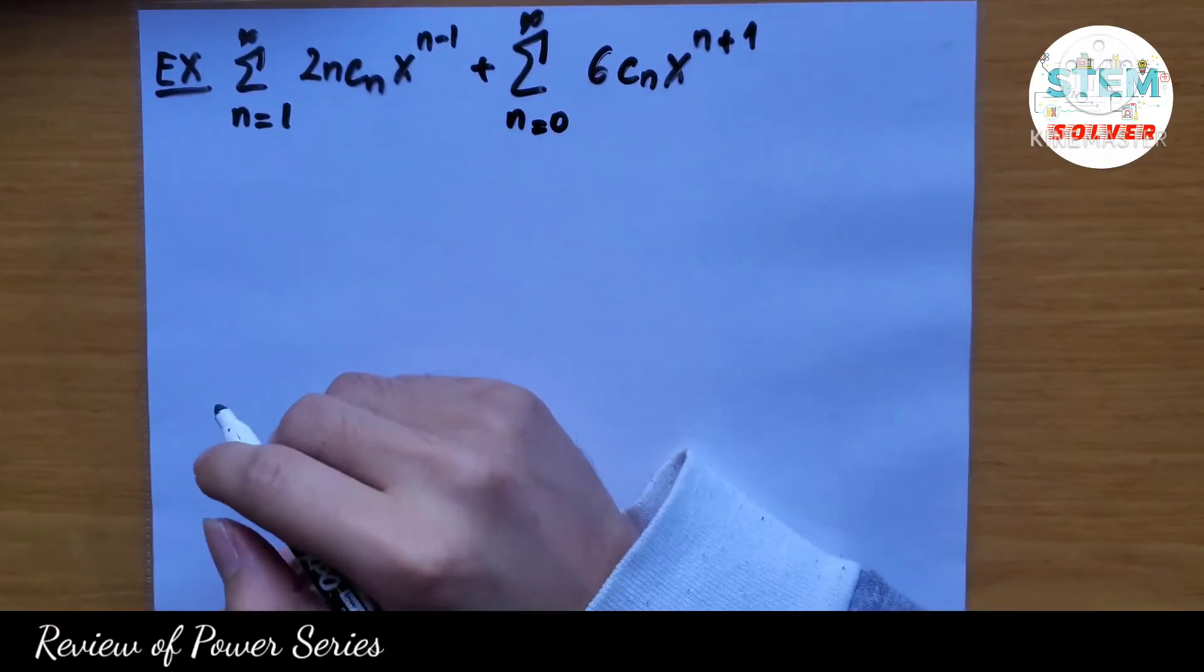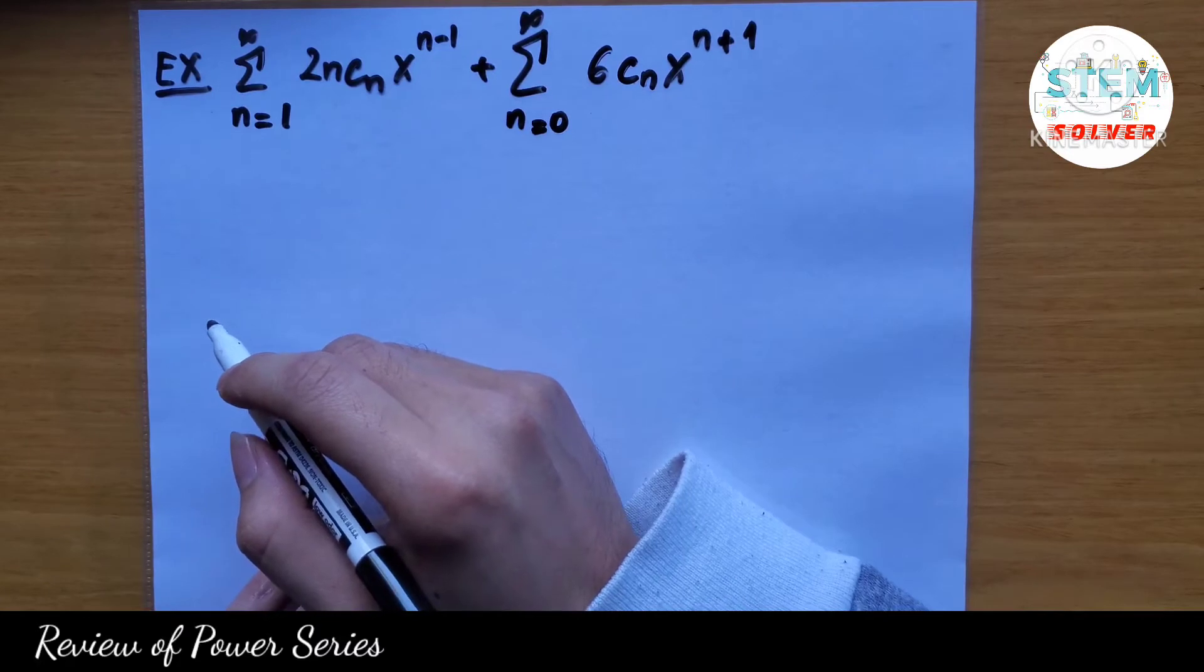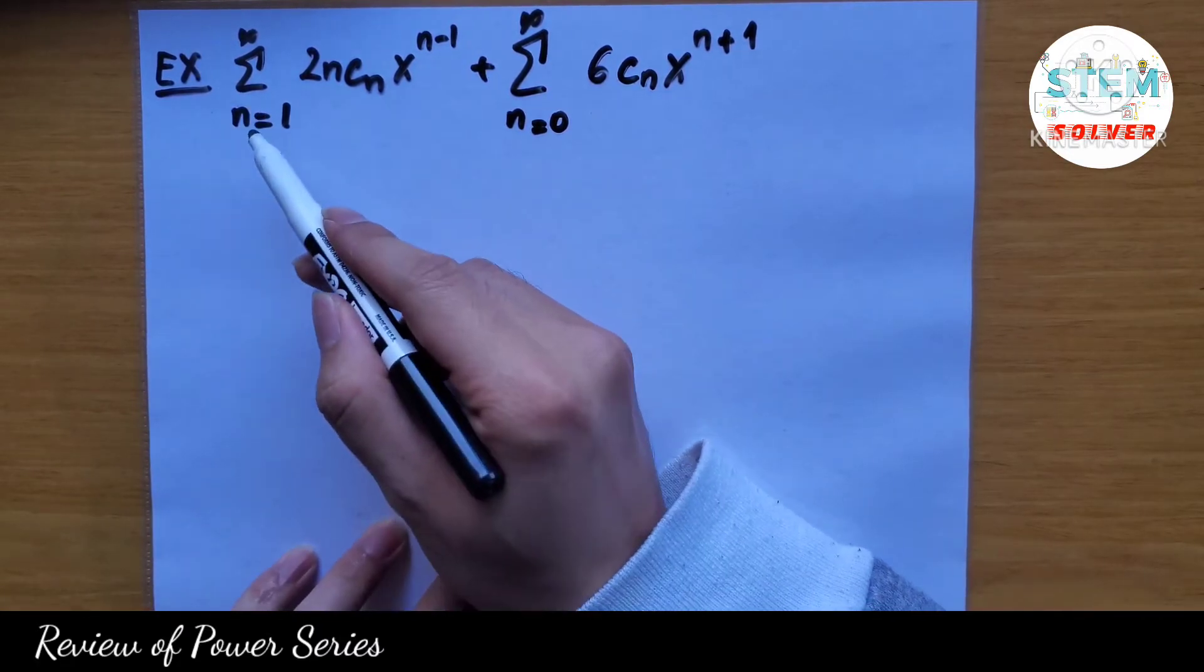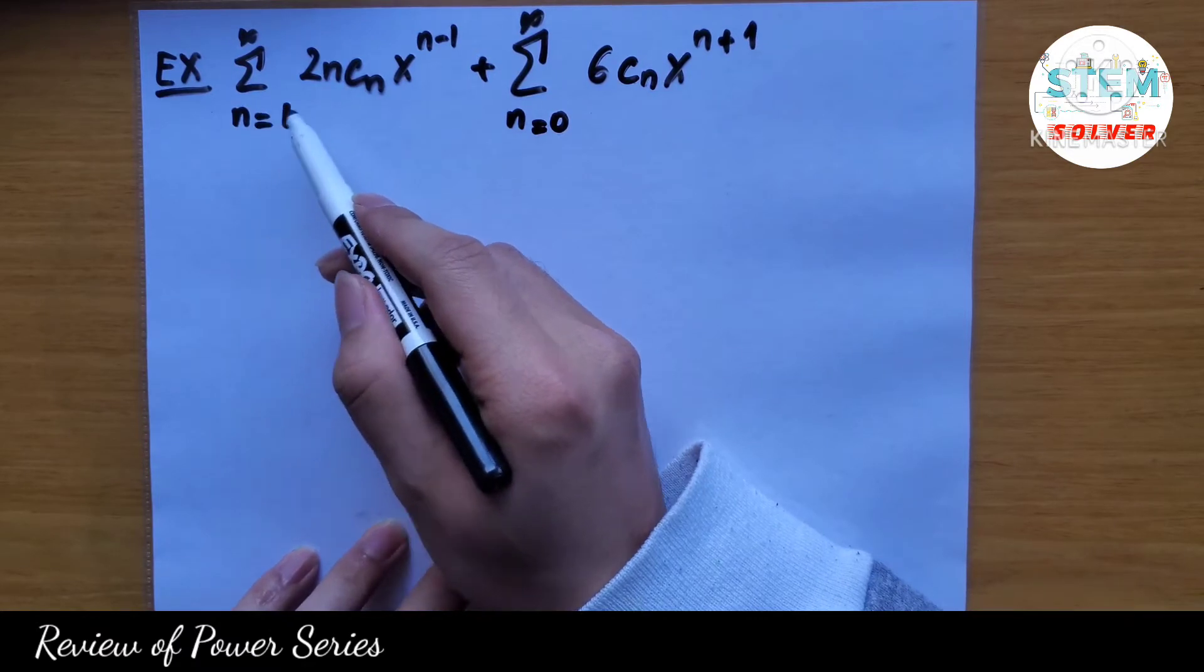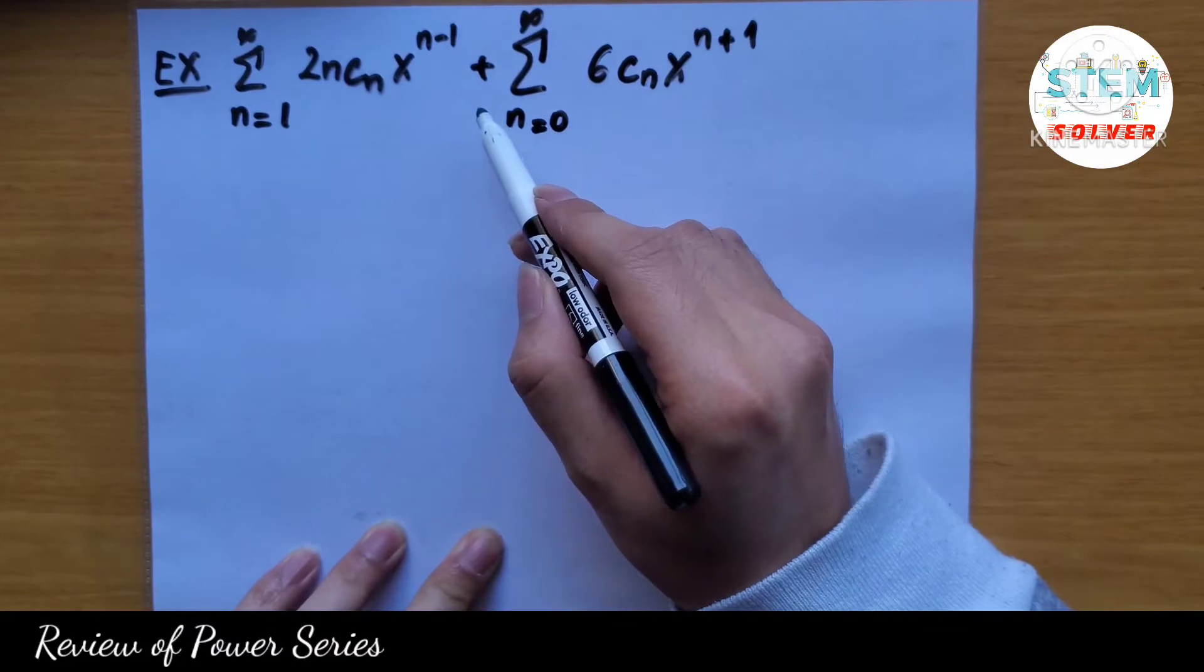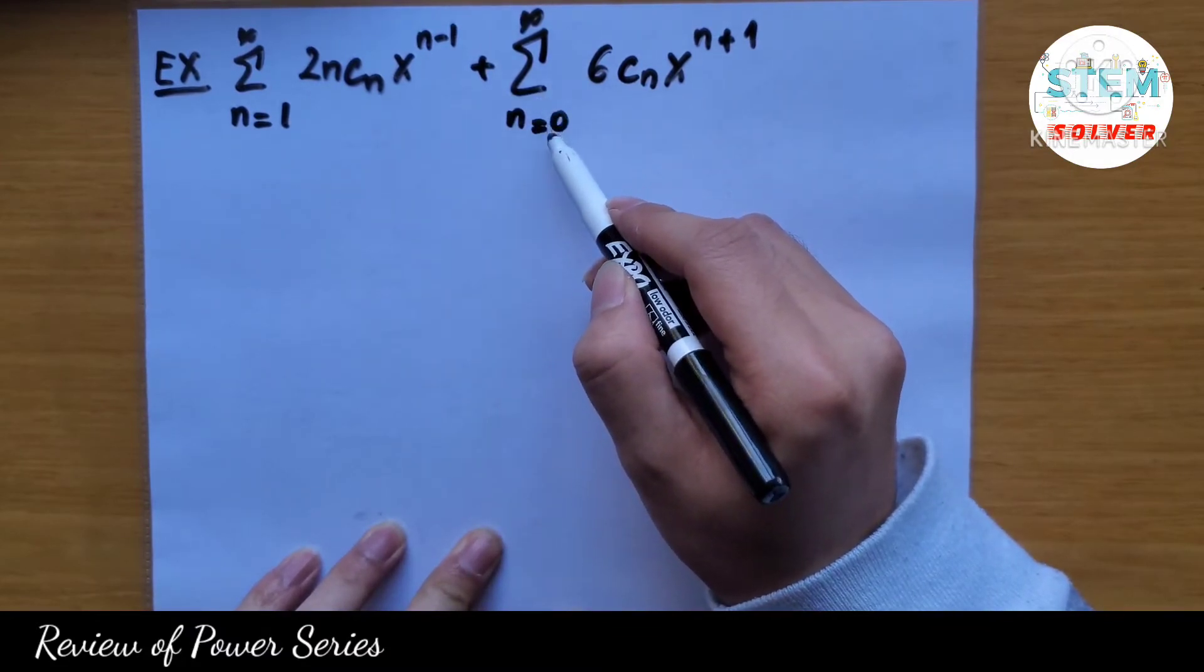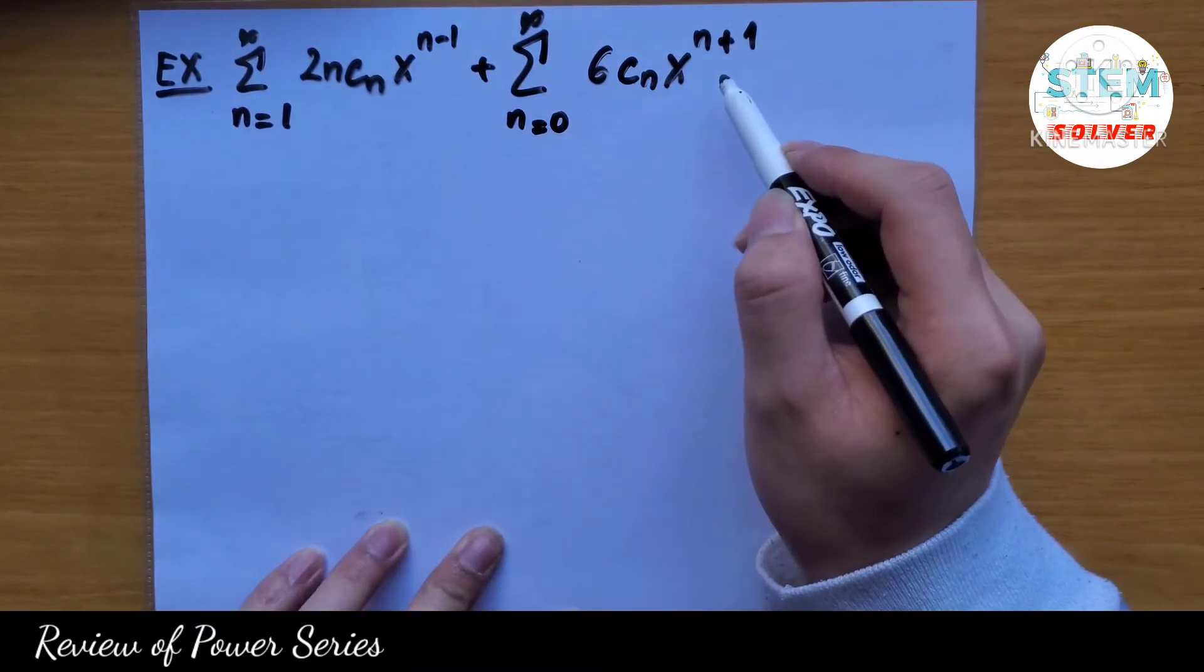All right guys, we write the given expression as a single power series. So we have series from n equal 1 to infinity, 2n cn x to the n minus 1, plus series from n equal 0 to infinity, 6 cn x to the n plus 1.